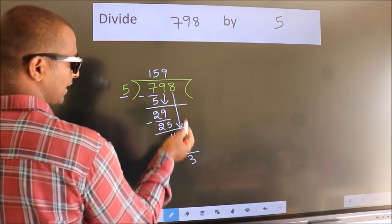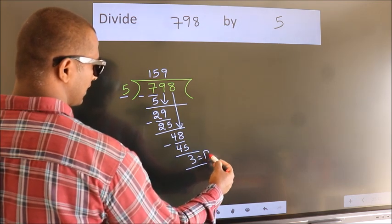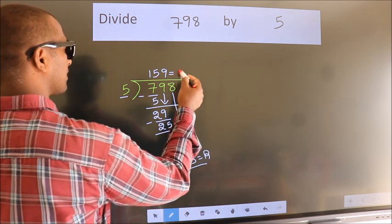No more numbers to bring down, so we stop here. This is our remainder, and this is our quotient.